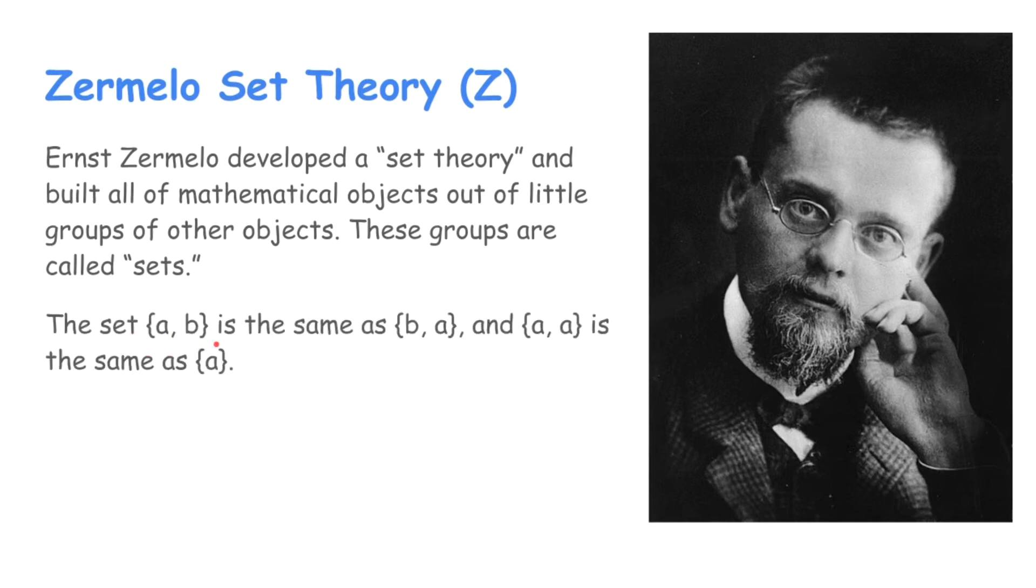So the set {A, B}, the set containing A and B, is the same as {B, A}. So it's completely unordered. It doesn't matter where they are in the set, they're both in the set. And the set containing A and itself is just the set containing A. So it doesn't matter how many times the element is in the set. It's just, is the element in the set or not? So it doesn't matter the order or the number.